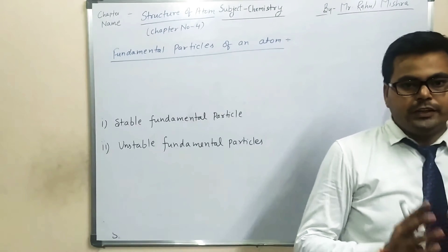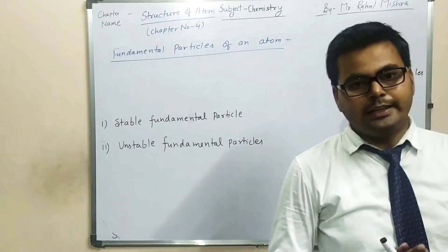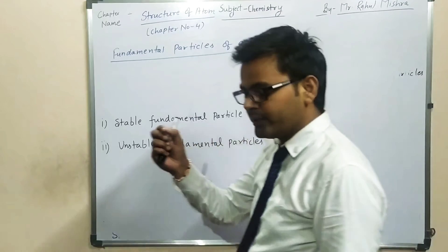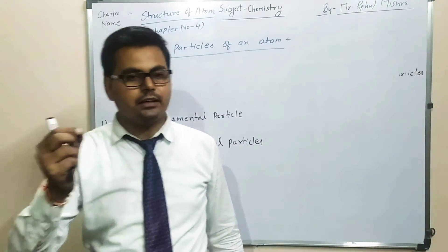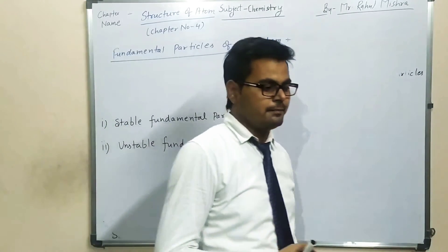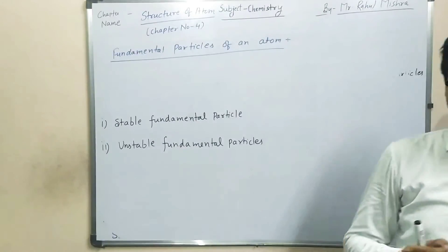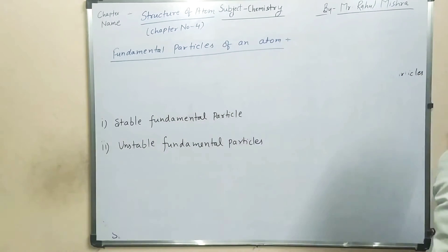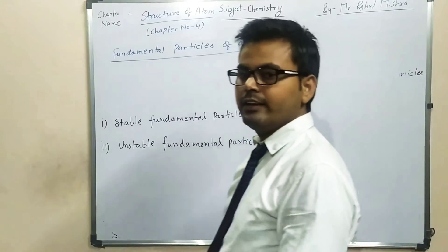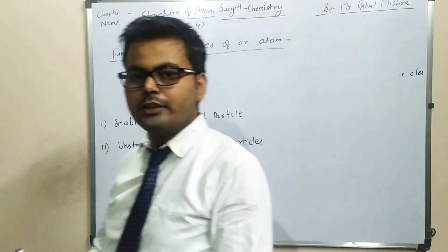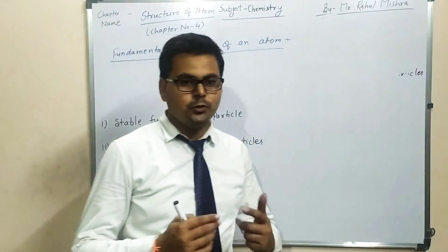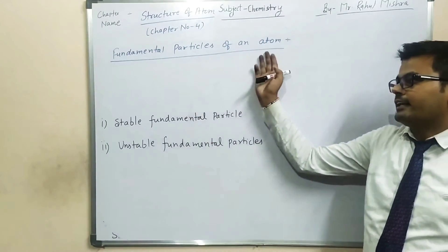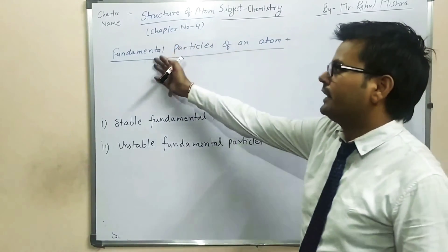Atom is made up of very small tiny particles. Atom جو ہوتا ہے وہ بہت چھوٹے چھوٹے tiny particles سے مل کر بنتا ہے. And those tiny particles are called as fundamental particles of an atom. और वही tiny particles, वही छोटे छोटे कण क्या बोले जाते हैं? इसी atom के fundamental particles.